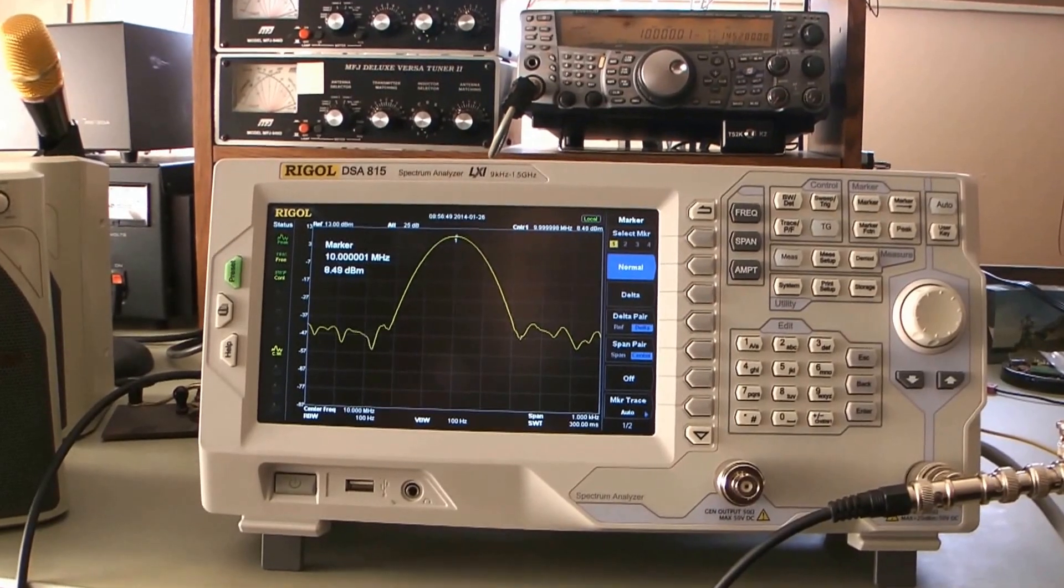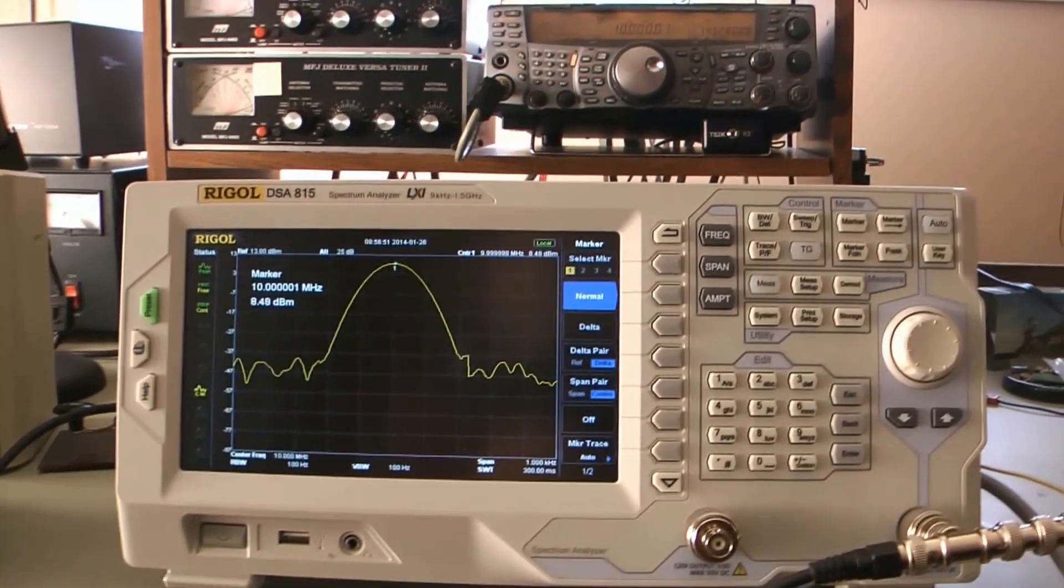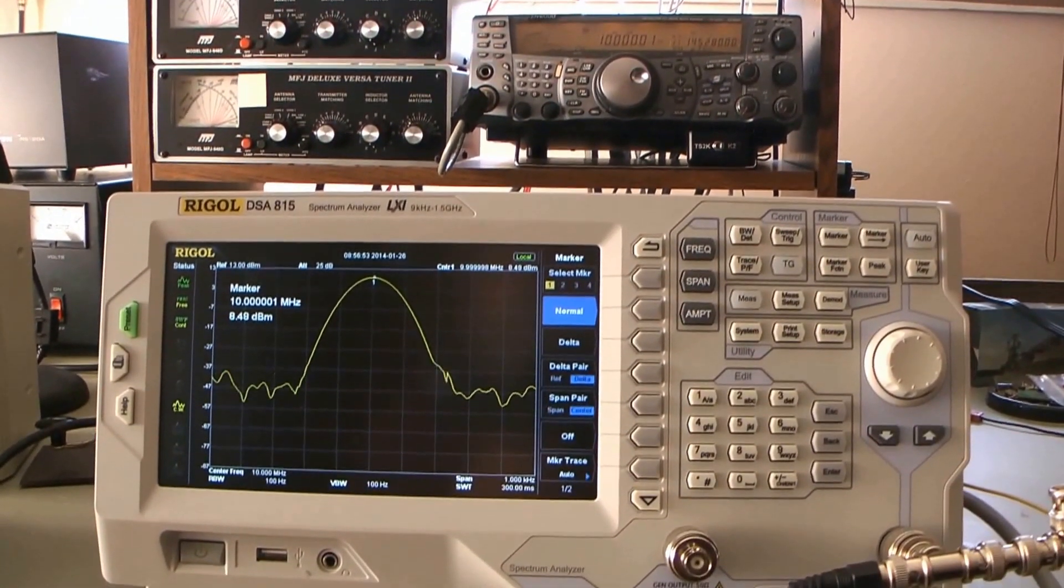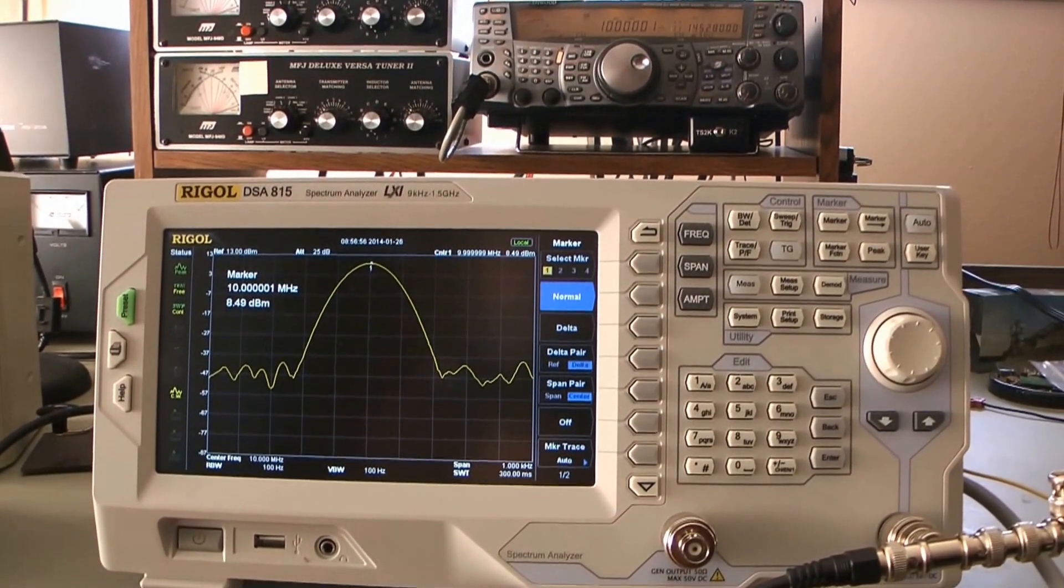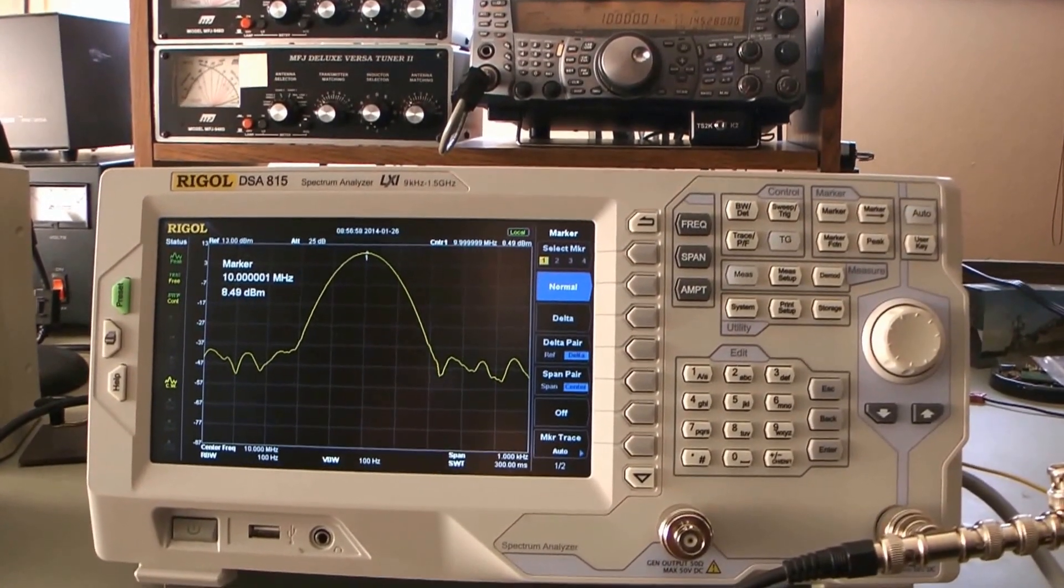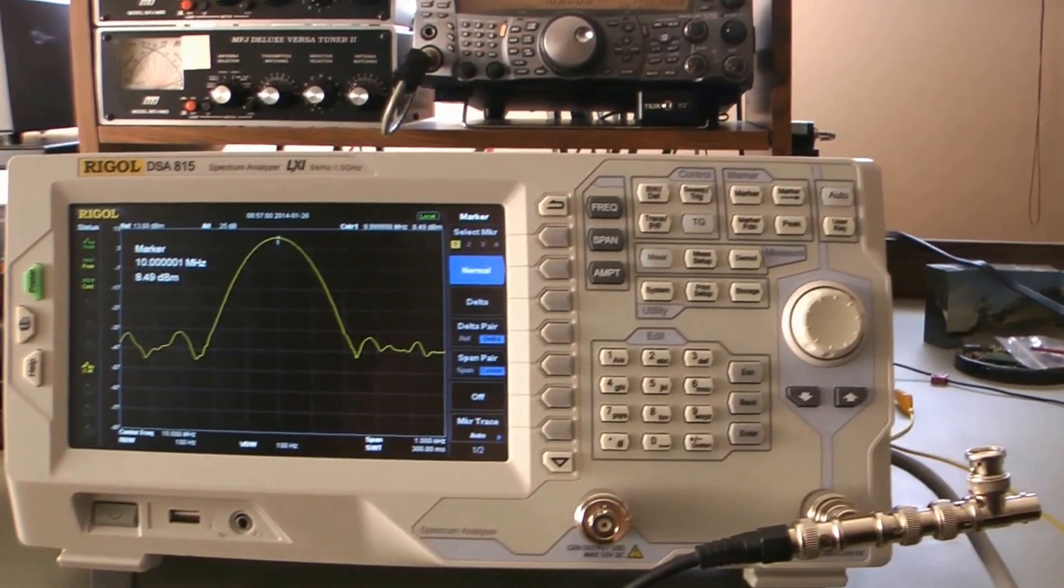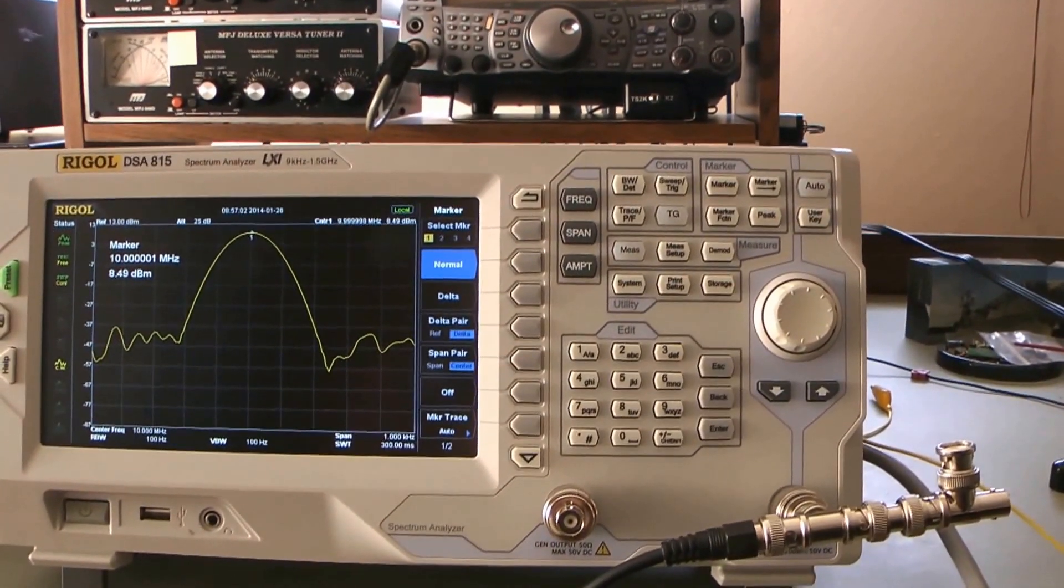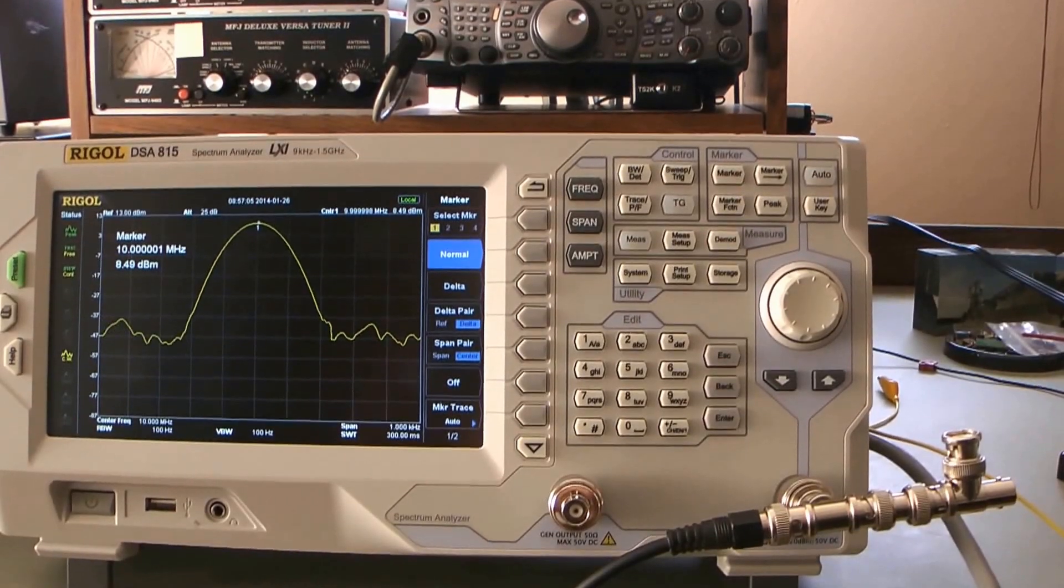So first a little bit about the setup. What you're looking at is the signal from the 10 MHz output port on the back, and then that's just feeding the signal generator. That's not really important for the calibration, but just so that you can see.